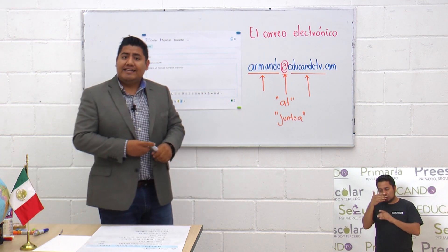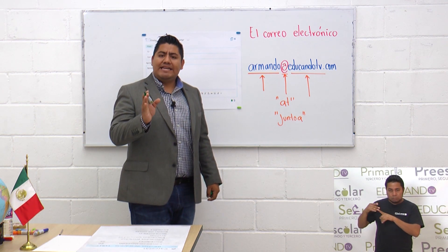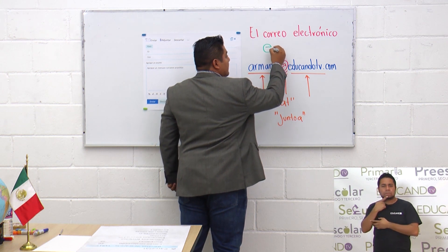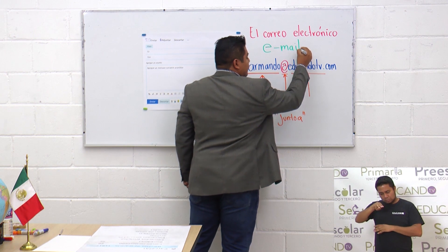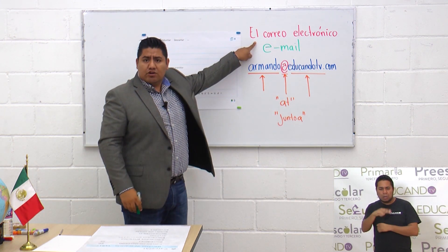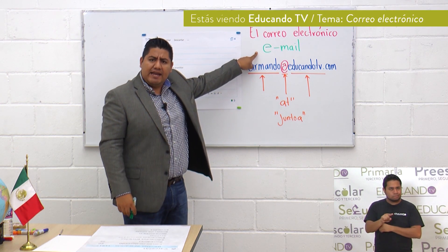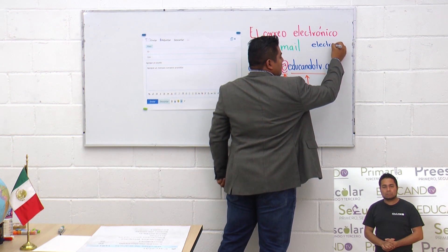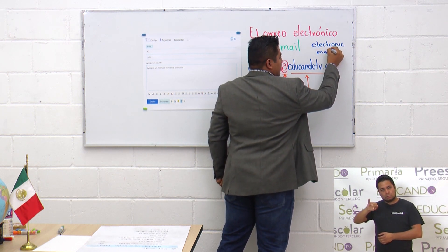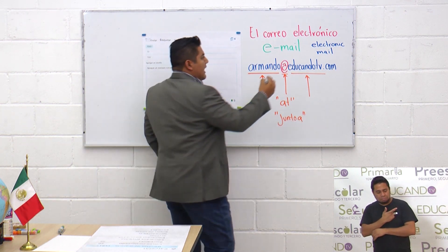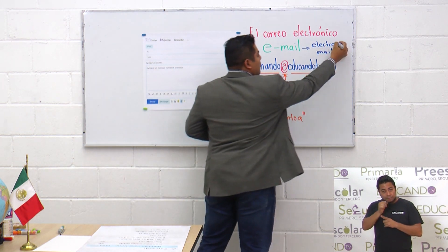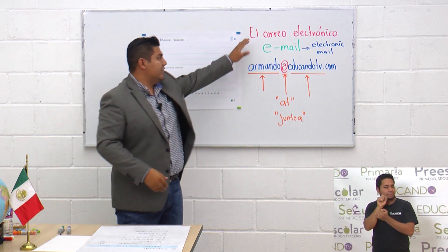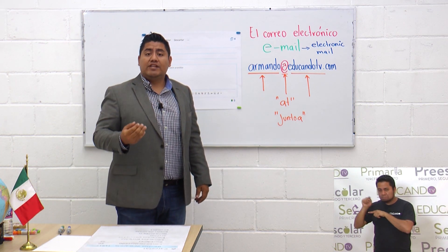Otra característica importante es que el correo electrónico también se puede encontrar o utilizar de diferente forma: algunos lo reconocen como 'e-mail'. ¿Qué significa e-mail? En inglés significa 'electronic mail', es decir, correo electrónico. Tú puedes reconocerlo como correo electrónico o como e-mail; cualquiera de las dos formas son referencias válidas y las puedes usar en tu comunicación oral.